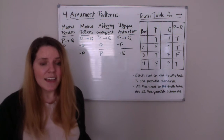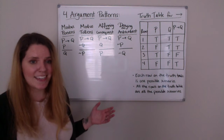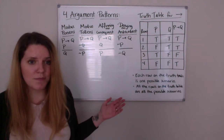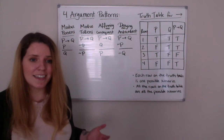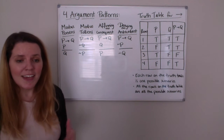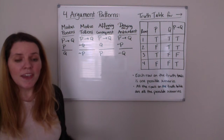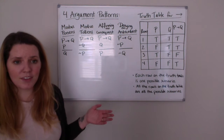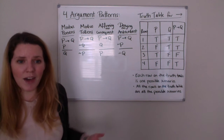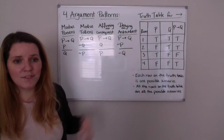So remember, question 9 asked: in the following four argument patterns on the board — modus tollens, modus ponens, denying the antecedent, and affirming the consequent — which row on the conditional truth table is most useful for determining the validity of the argument pattern? We did the example with modus ponens in the video, and I want to run through that again, slow it down, and then repeat the process with the other three argument patterns so we can see what the right answers were and more importantly why.